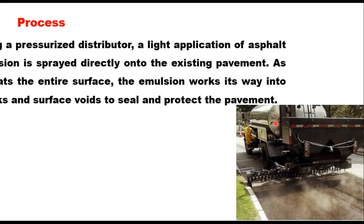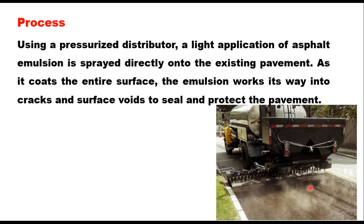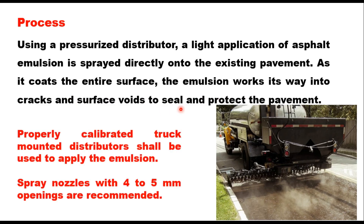The process of applying fog seal is simple. Using a pressurized distributor, a light application of asphalt emulsion is applied directly onto the existing pavement. As it coats the entire surface, the emulsion works its way into cracks and surface voids to seal and protect the pavement. Properly calibrated truck-mounted distributors shall be used to apply the emulsion.